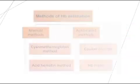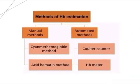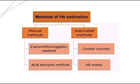I'm Shansa Ali and I'm going to tell you the methods of hemoglobin estimation. There are two types of methods: manual and automated. On the manual side we have the cyanmet hemoglobin method and the acid hematin method. On the automated side we have the Coulter counter and the HP meter.